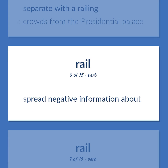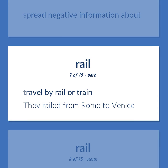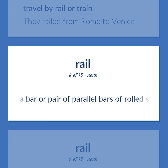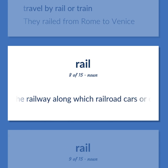Rail (verb): Spread negative information about. Travel by rail or train — they railed from Rome to Venice. A bar or pair of parallel bars of rolled steel making the railway along which railroad cars or other vehicles can roll.